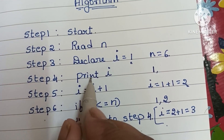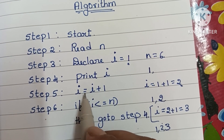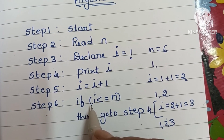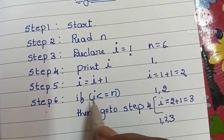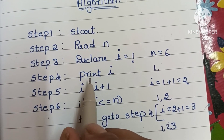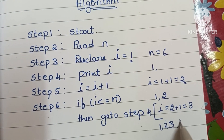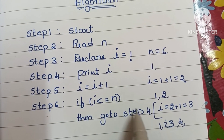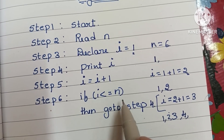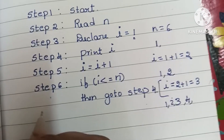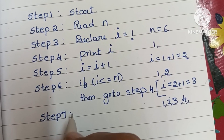It becomes 1, 2, 3. We increase i to 4. Four is less than or equal to N (which is 6), true, so we go to step four and print i which is 4. This repeats until i is no longer less than or equal to N. When the condition is false, it exits the loop and goes to step seven.